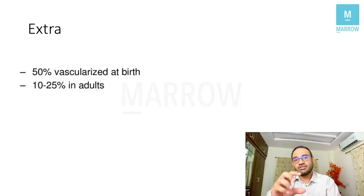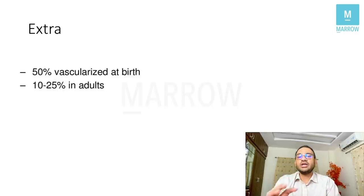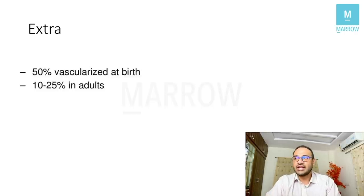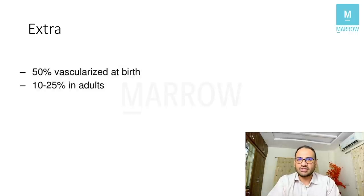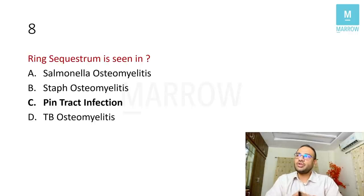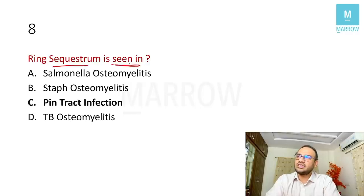One extra point: at the time of birth, 50% of the meniscus is vascularized. But as you grow older, the vascular supply keeps decreasing and is only limited to the peripheral 10 to 25%. This is a possible new question they can ask.